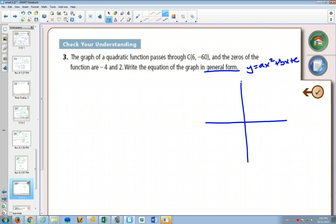Because this one tells us what the zeros are, whenever you know what the zeros are, that is a hint to use the factored form.